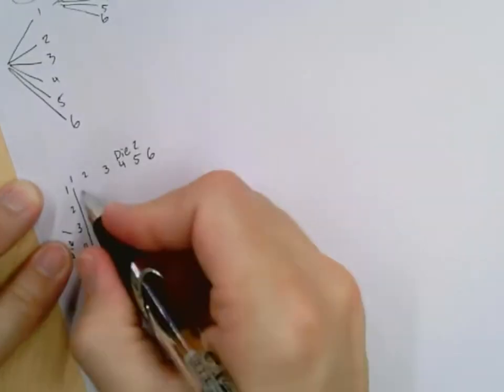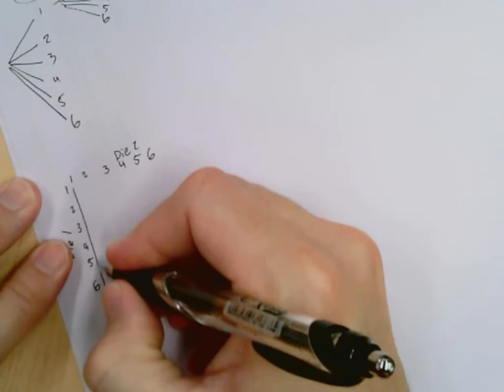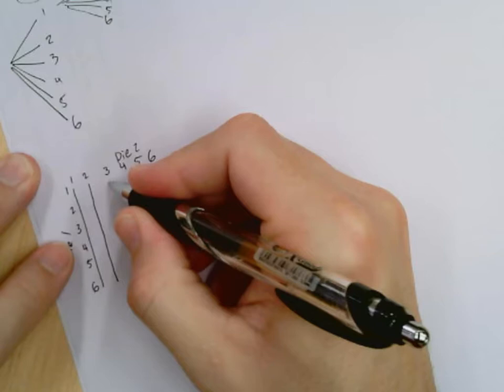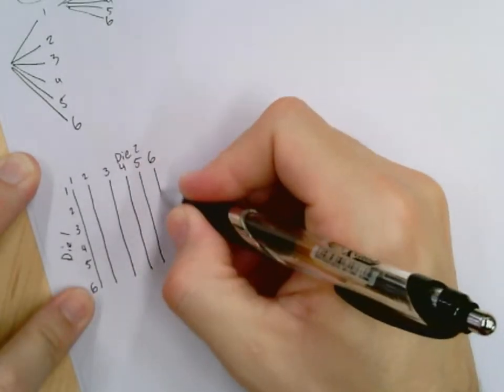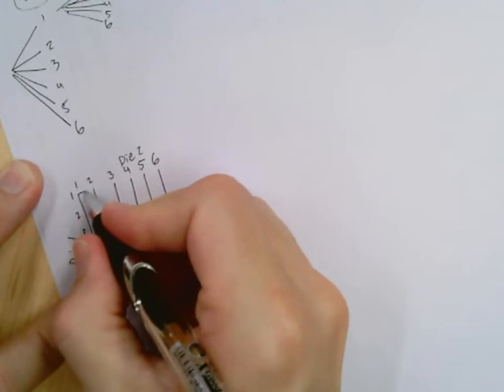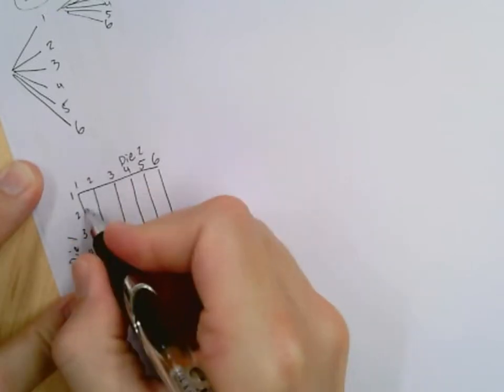Now at this point, you just create a line, just like I did for number one there, create a line for each of those numbers. So four, five, six, and then the one on die one as well. So right there, right there.